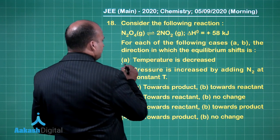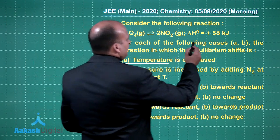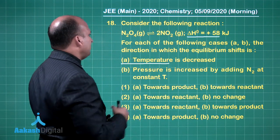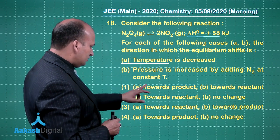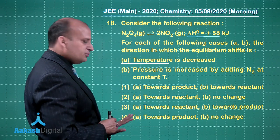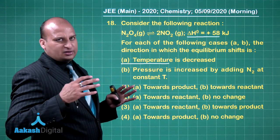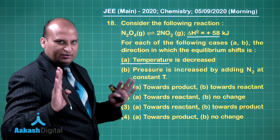First it says that the temperature is decreased. See it is an endothermic reaction. If you are decreasing the temperature, the reaction will go in the backward direction that is towards the reactant, towards the reactant. We are having choice number 2 and 3, 1 and 4 move out. I normally, you know, try to do this elimination technique. It really works.